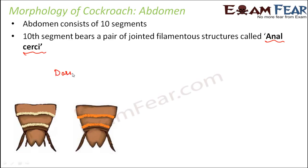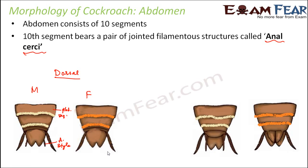Looking at the dorsal view for both male and female cockroach, there is one additional structure in the male called the anal style, which is not present in the female. Each of these segments is known as an abdominal segment, and they are all well segmented. In the ventral view, the anal style can be seen more clearly because it arises from that region.